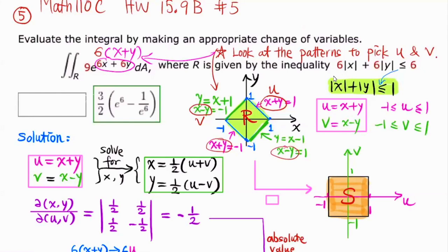I look at the boundary line X plus Y equal to 1. For the absolute value sum to be less than or equal to 1, X and Y can't be too large — X is between negative 1 and 1, and Y is between negative 1 and 1. So another boundary is X plus Y equal to negative 1, where the absolute value sums to 1 along that line.